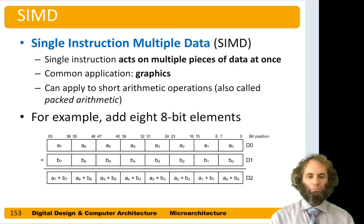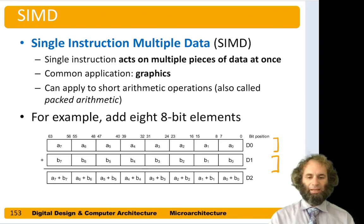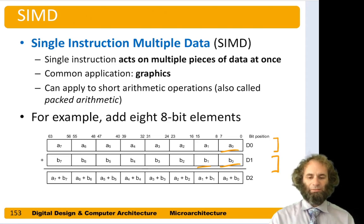One more technique for issuing more operations at a time is called single instruction multiple data, or SIMD. A single instruction acts on many pieces of data at once. Common applications include graphics and machine learning, and it can apply to any short arithmetic operations — sometimes called packed arithmetic. For example, with 64-bit registers d0 and d1, a packed add on 8-bit chunks treats each register as eight 8-bit values and produces eight 8-bit sums. Any overflow between columns is discarded rather than affecting the next pair, so if these values were pixels, we'd be doing arithmetic on eight pixels simultaneously and get eight times the performance.